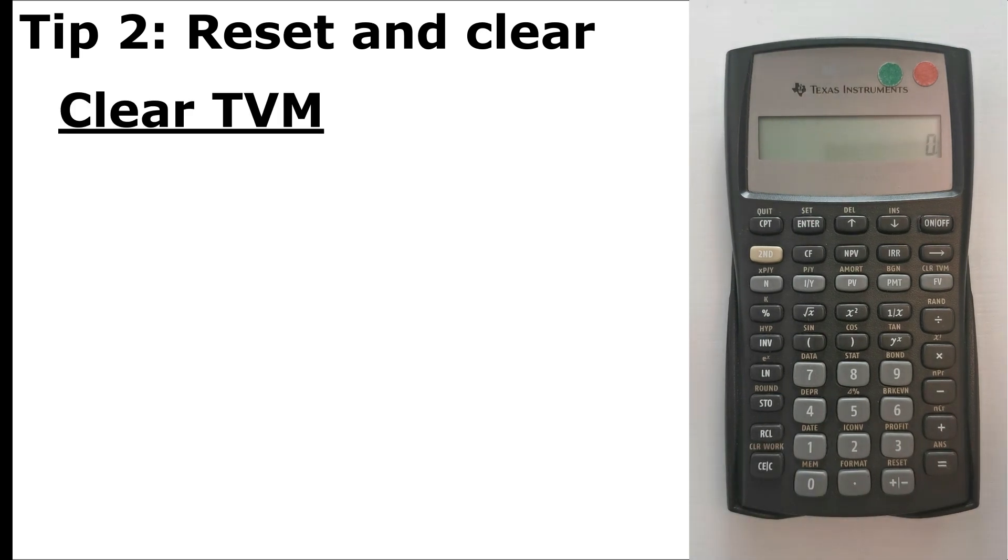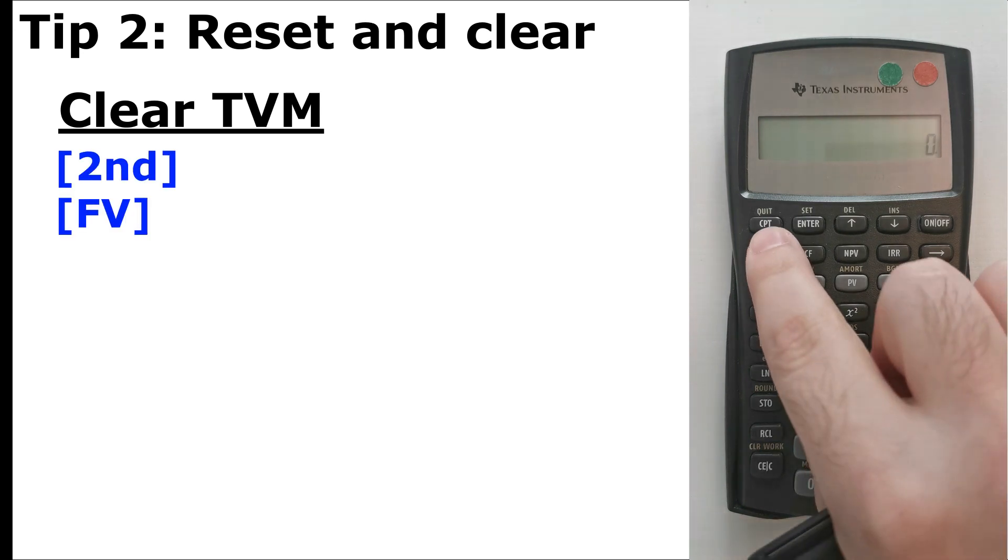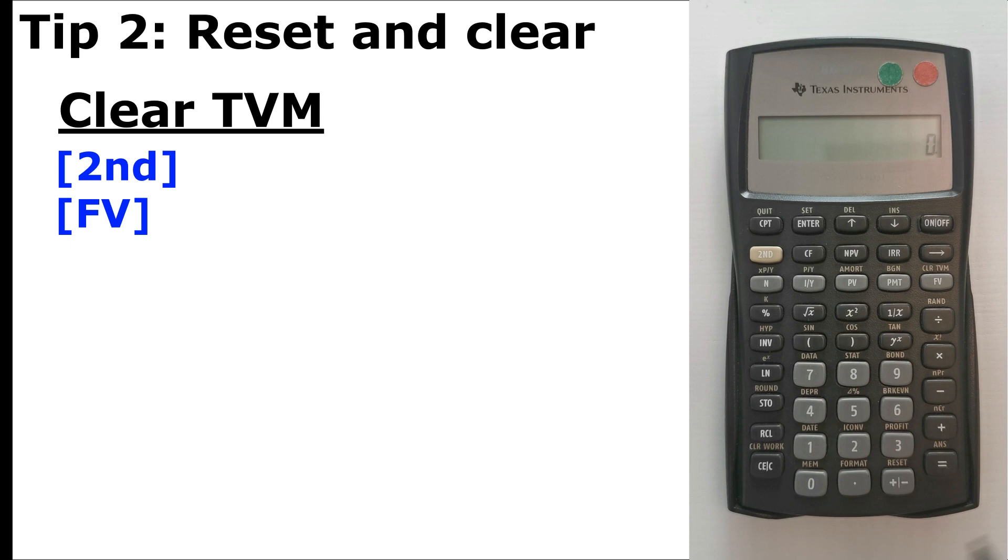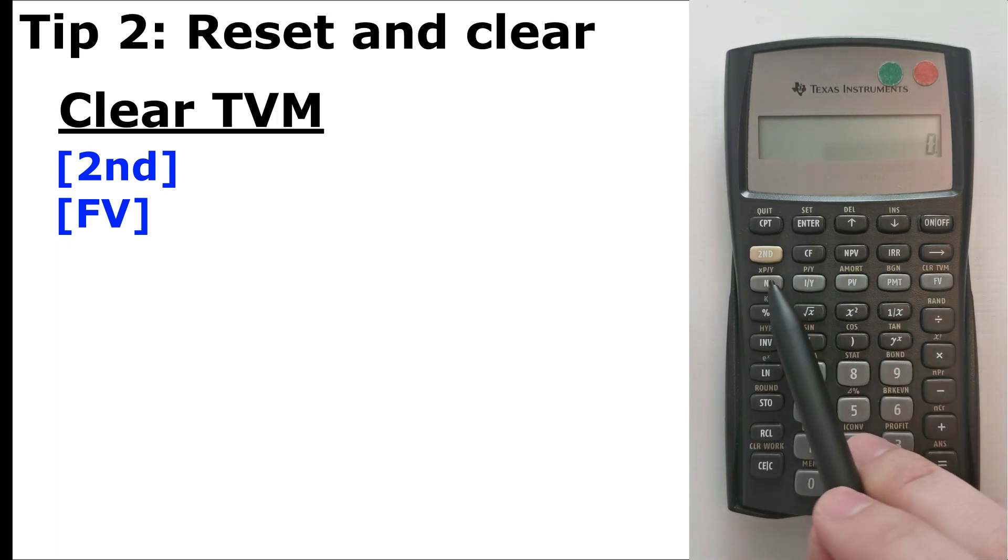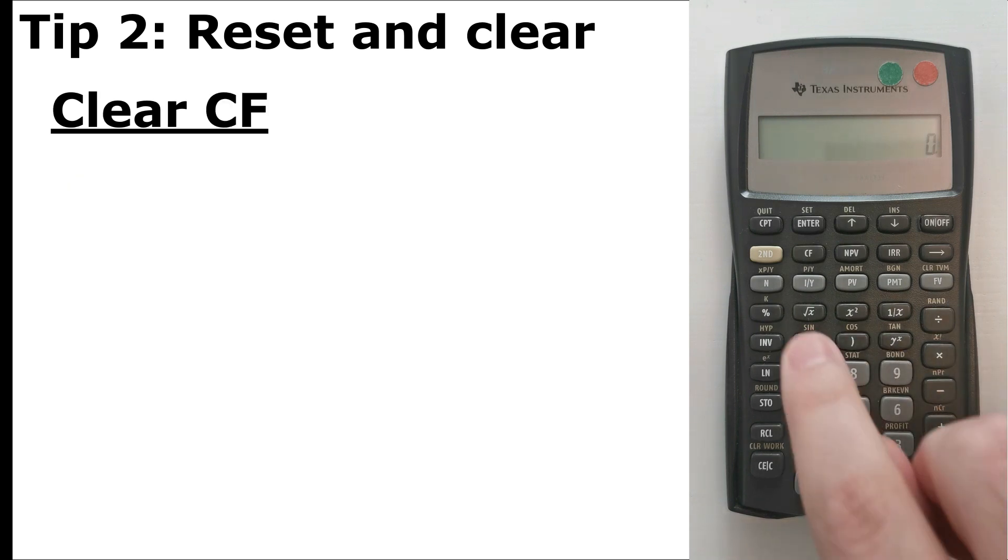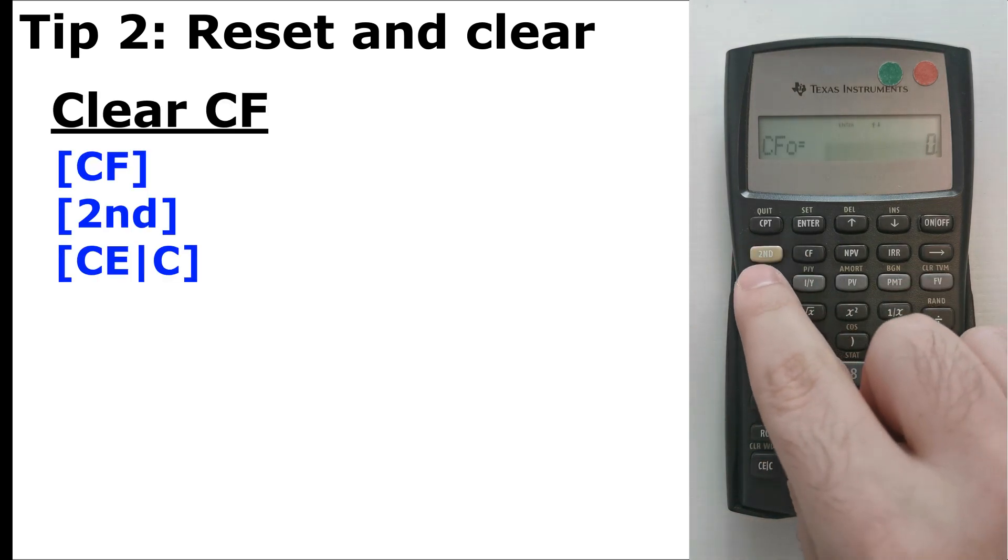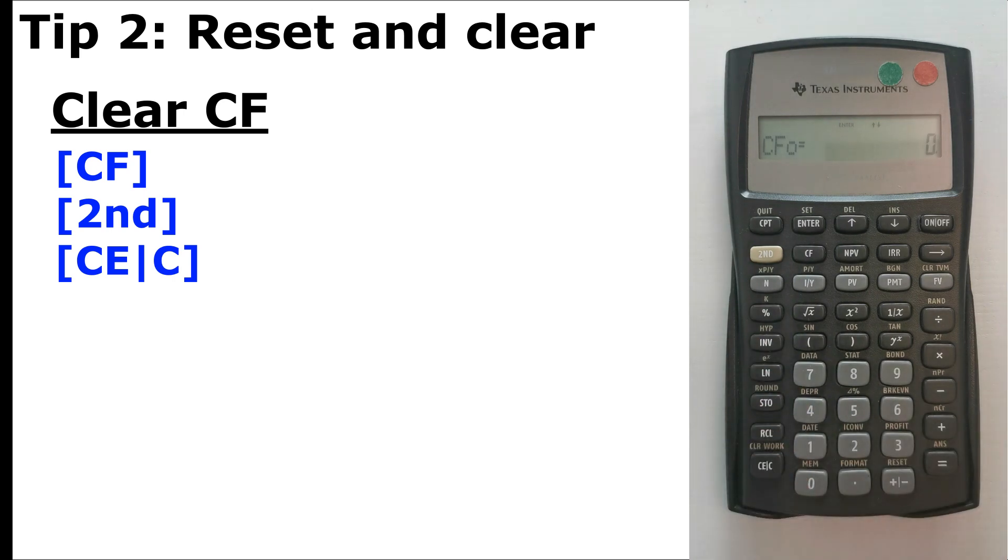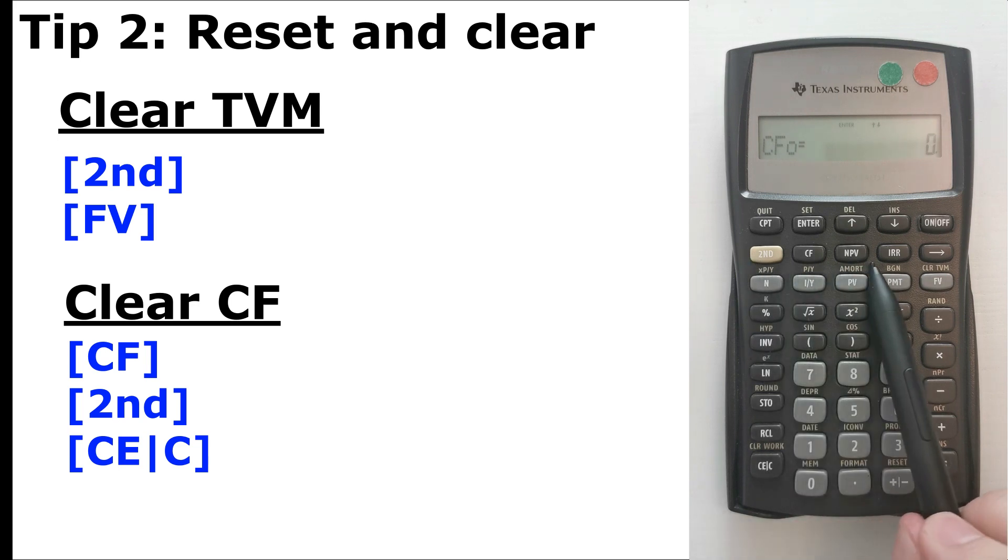And to clear out our numbers in the calculator, we have two ways that we could do that each for a separate function. For the function when we're using the time value of money, what we do is we press second, future value. This way we reset all those inputs back to zero. We'll see later on today how to input numbers into this function. And to clear out the cash flow, we press cash flow, then second, clear. Now the cash flows are cleared. So we have two major ways to clear: either clear the time value of money or the cash flow function.